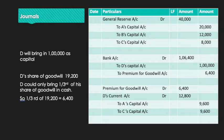Journal Entry 3: Premium for Goodwill Account Dr. 6,400; D's Current Account Dr. 12,800 (being the two thirds of goodwill not brought in by D); To A's Capital Account 9,600; To C's Capital Account 9,600 — because the sacrificing ratio between A and C was equal.